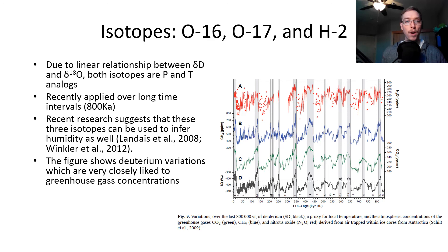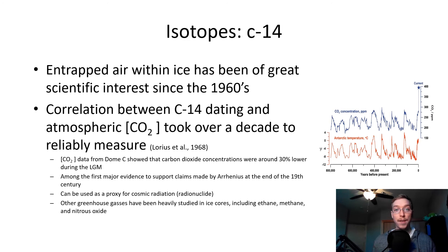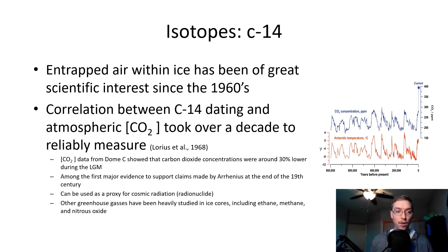These figures show deuterium variations, which are very closely linked to greenhouse gas concentrations. For isotopic C-14: entrapped air within ice has been of great scientific interest since the 1960s. C-14 dating and atmospheric carbon dioxide took over a decade to measure reliably. Carbon dioxide data from Dome C showed CO2 concentrations were about 30 parts per million lower during the last glacial maximum — among the first major evidence supporting claims made by Arrhenius at the end of the 19th century. Other greenhouse gases heavily studied in ice cores include ethane, methane, and nitrous oxide.